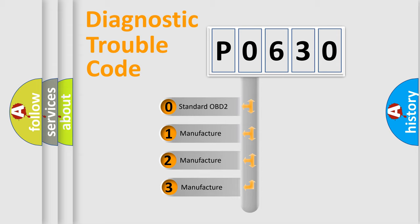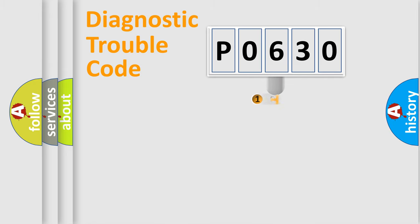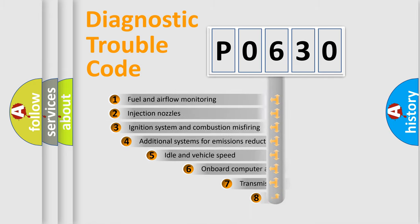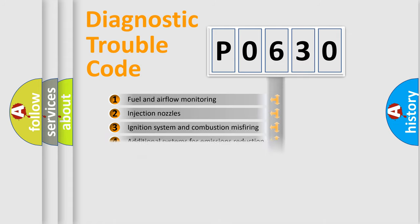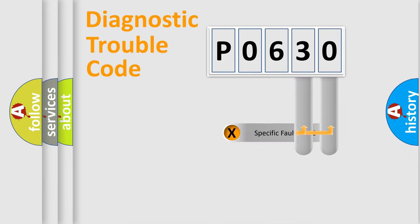If the second character is expressed as zero, it is a standardized error. In the case of numbers 1, 2, 3, it is a more prestigious expression of the car specific error. The third character specifies a subset of errors. The distribution shown is valid only for the standardized DTC code. Only the last two characters define the specific fault of the group.